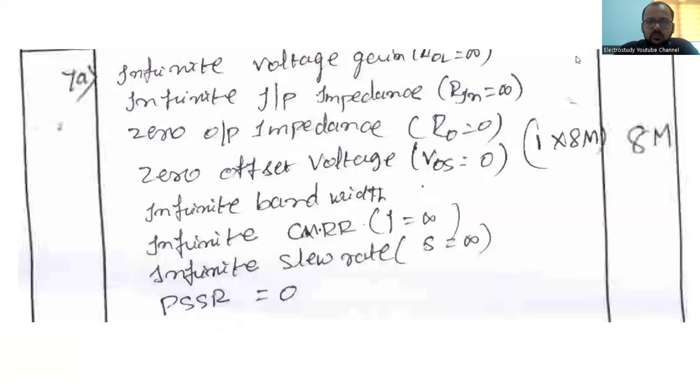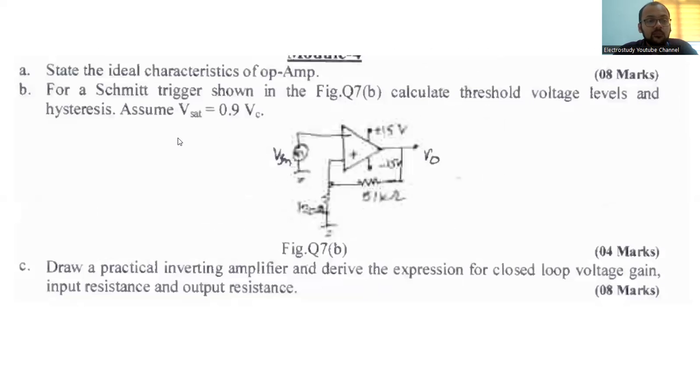What are the ideal characteristics? This is the most important question. I have seen these kinds of questions several times. Infinite voltage gain, then infinite input impedance, zero output impedance, zero offset voltage, infinite bandwidth, infinite common mode rejection ratio (CMRR), that is actually infinite slew rate. TSSR, that also becomes zero. These are the important ideal characteristics of operational amplifier. Kindly make a note that this is one of the most important questions.